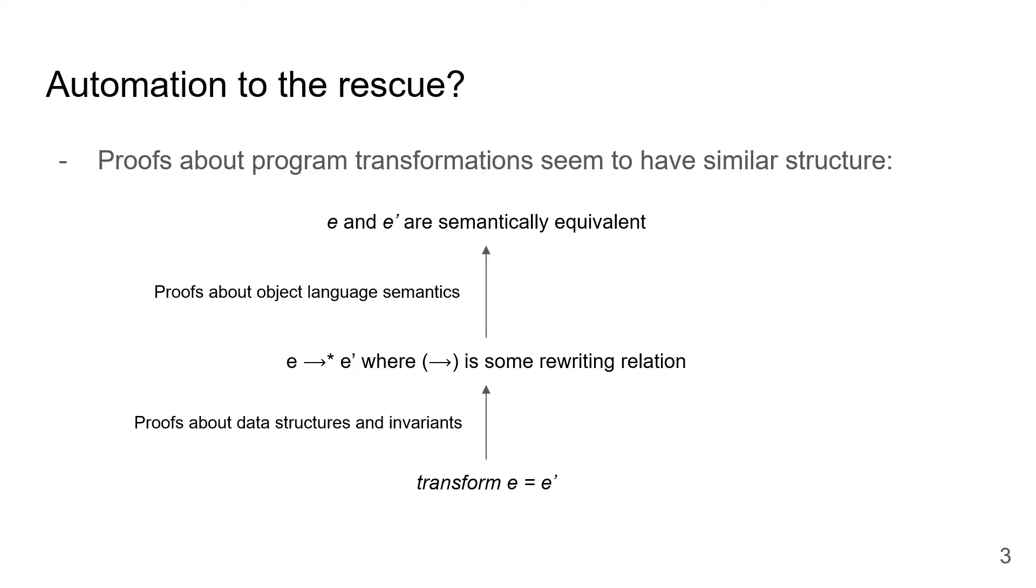Then, this relational spec is proved sound with respect to the semantics of the object language. This way of structuring the proof cleanly separates the task of proving a program transformation correct into one part that can just think about the semantics of the object language, and one part that can just think about the various data structures and invariants that need to be maintained by the implementation.